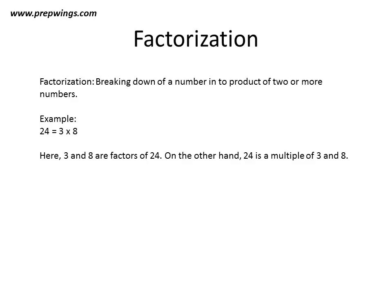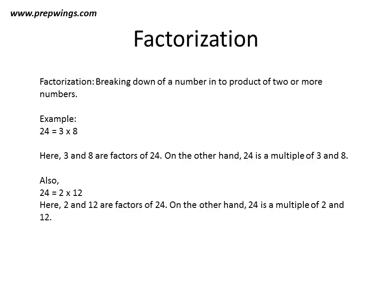Factorization of a number can be done by breaking it down into products of numbers. We can also break 24 down as 2 into 12, so 2 and 12 are also factors of 24 and 24 is a multiple of 2 and 12. As you can see, the same number can be broken down in different ways — 24 can be written as 3 into 8 or as 2 into 12.